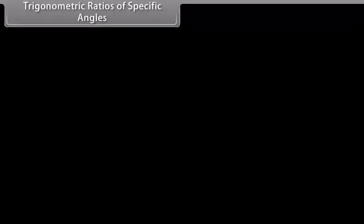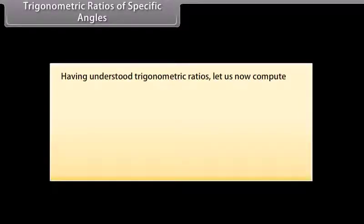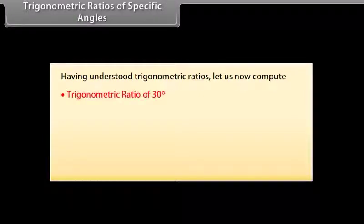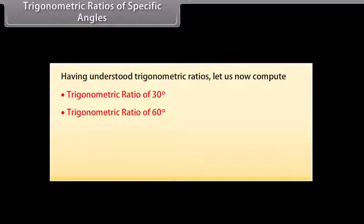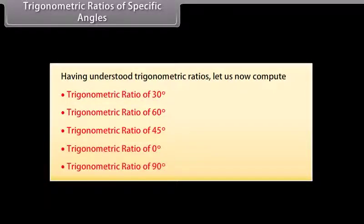Having understood trigonometric ratios, let us now look at trigonometric ratios of specific angles: 30 degrees, 60 degrees, 45 degrees, 0 degrees, and 90 degrees.